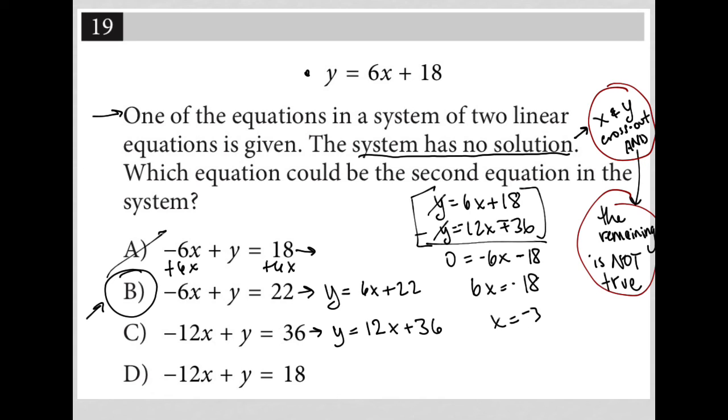Again, the hint here, the key here was system has no solutions. If you didn't know this already, please do put it in your notes and make sure to memorize. A system having no solutions means x and y will cross out, and the remaining is not true.